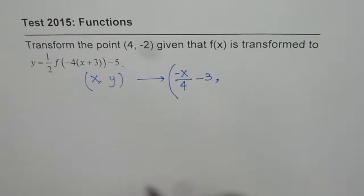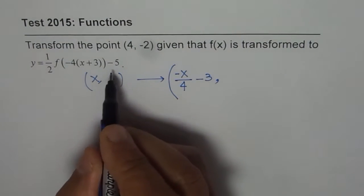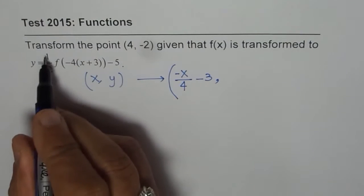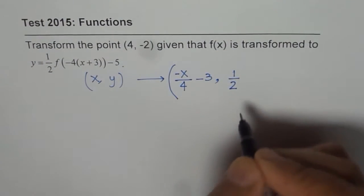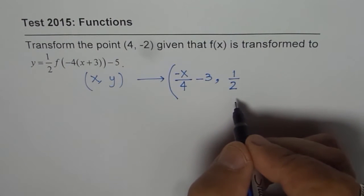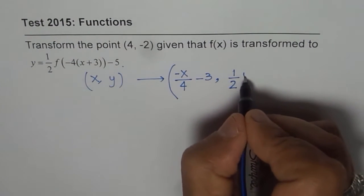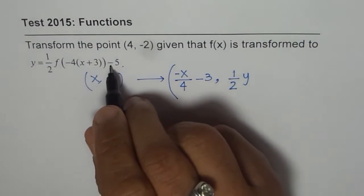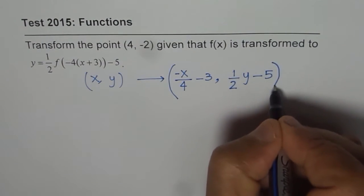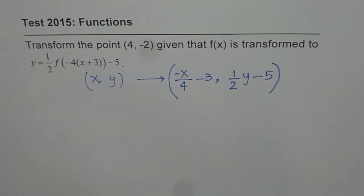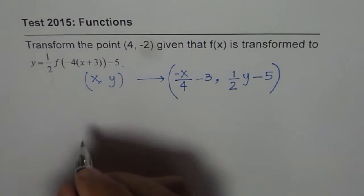As far as y point is concerned, it will get multiplied by half. That is a vertical compression by a factor of half on the original point, and translate 5 units down, minus 5. So that is the basic idea. Now this should help us to find the answer.